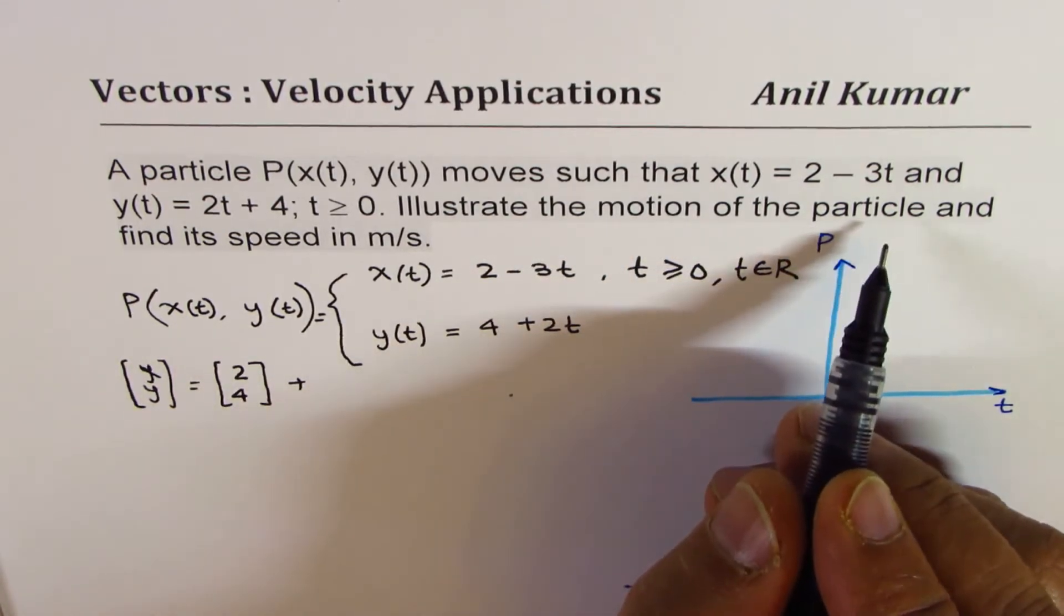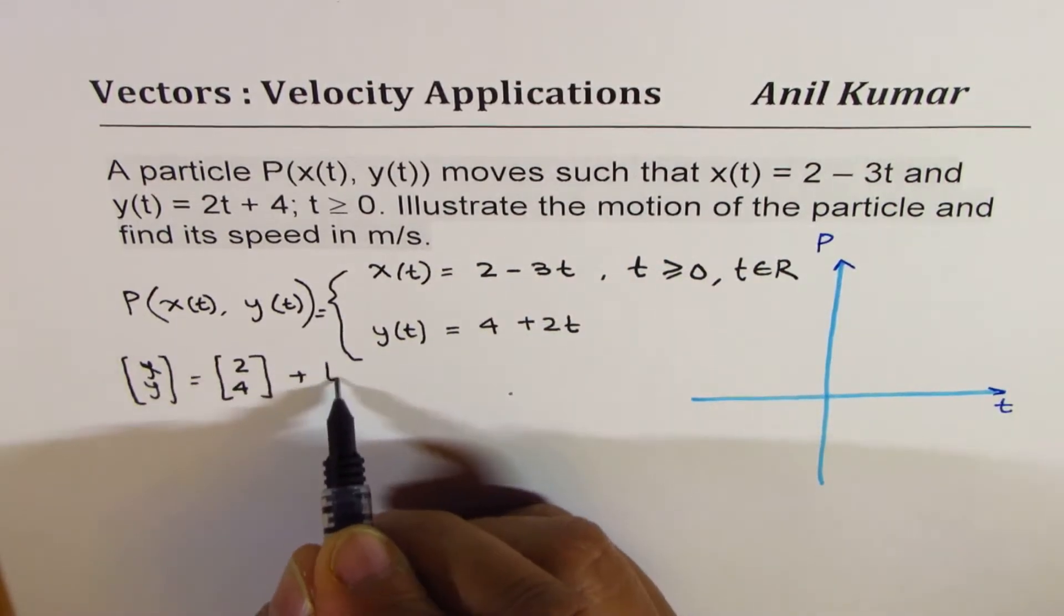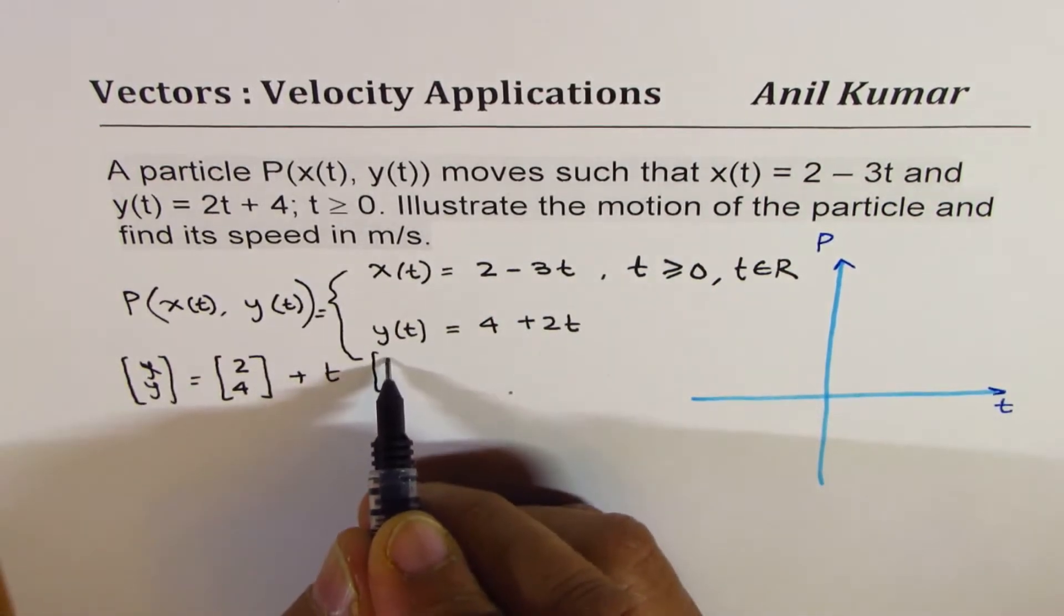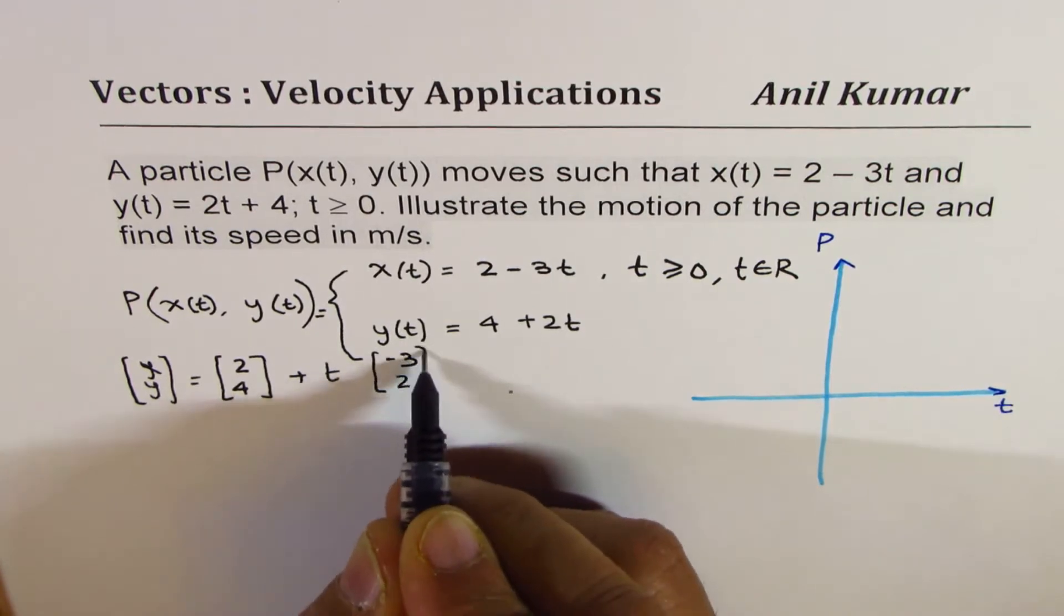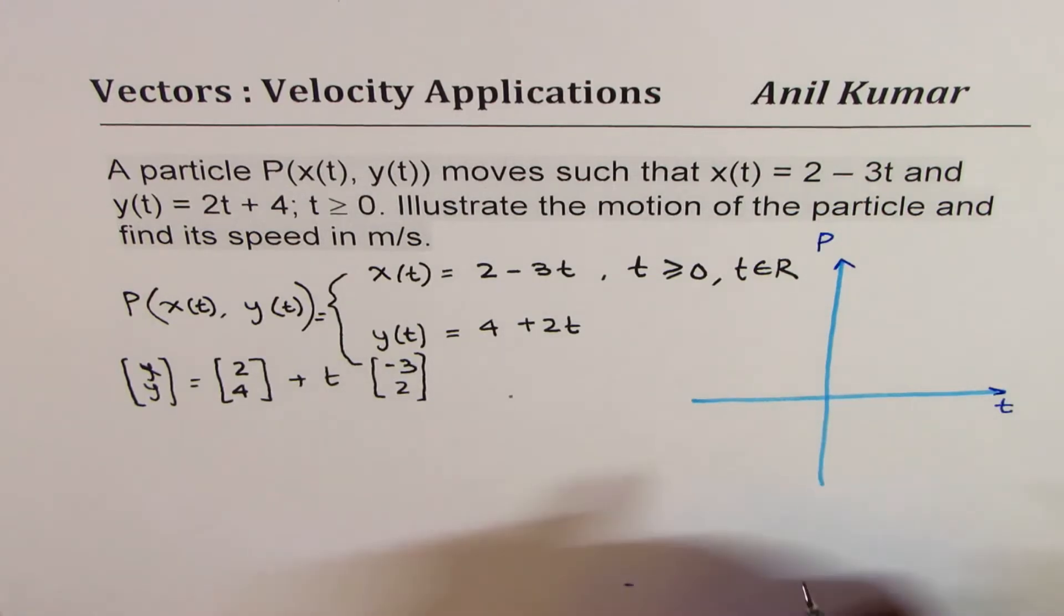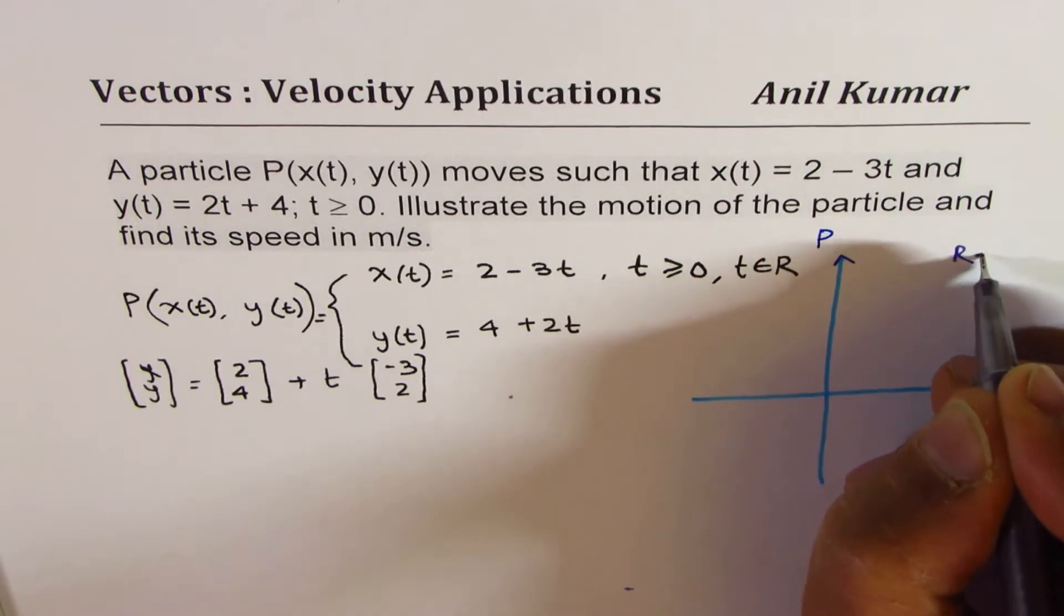Every other point you could find by placing the value of t as greater than 0, where t belongs to the set of real numbers. You get a continuous path and that is the motion we're talking about of the particle. That is t times the vector minus 3, 2.